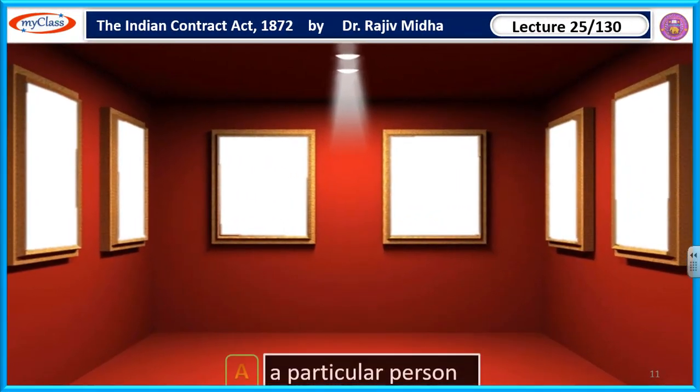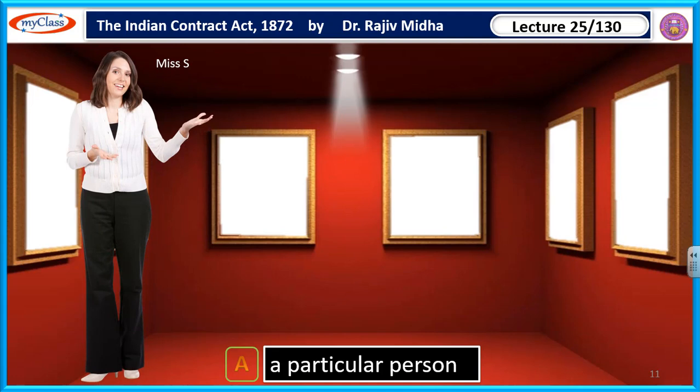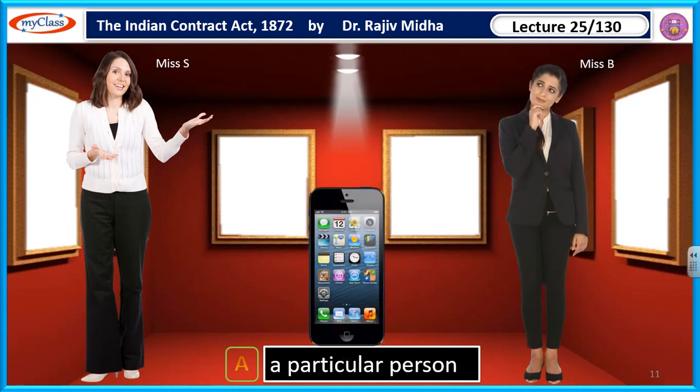Let's take up two examples. First, an example of a particular person: Miss S gives an offer to Miss B — 'If you want to purchase my mobile phone for Rs. 10,000, I am ready to sell.' Here, an offer has been given by Miss S to a particular person. So this offer will be termed as specific offer.